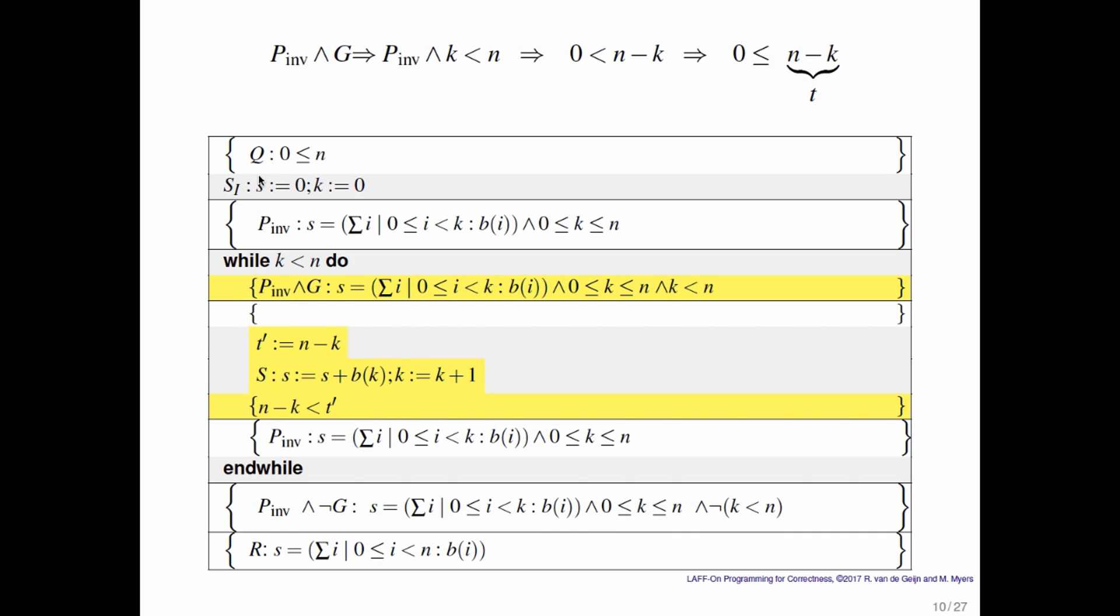This gets a little bit more complicated. Well, we have n minus k. We want to show that it decreases when we execute the statement s. And how would we reason through this? Well, we would say, before we execute s, n minus k has some value. And then after we execute s, that value has decreased by 1. So here what we're saying is, let's use a dummy variable, a temporary variable t prime, and let's store in it what n minus k was before the execution of command s. And then let's check after the execution of command s, whether n minus k is now less than this stored value. That's the basic idea.